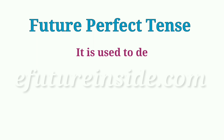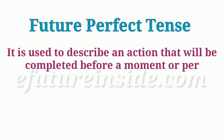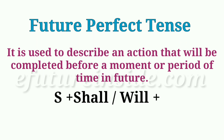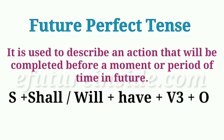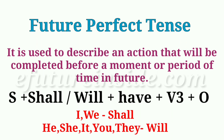Future perfect tense is used to describe an action that will be completed before a moment or period of time in the future. And the structure is: subject plus shall or will plus have plus third form of the verb plus object. With I and we we use 'shall', and with he, she, it, you, they we use 'will'. But nowadays everybody uses 'will' after I and we, so that is also correct. That we already learned in our previous video.